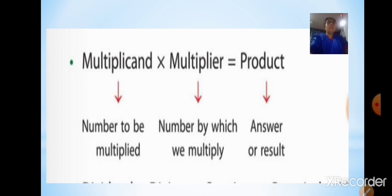In multiplication, the number to be multiplied is called the multiplicand. The second number — the number by which we multiply — is called the multiplier, and the answer or result we get is called the product.